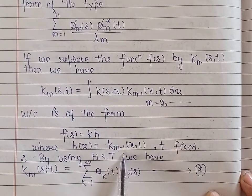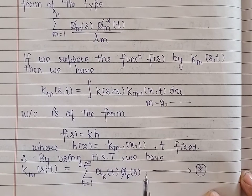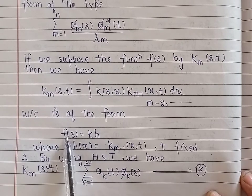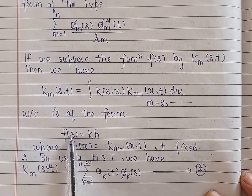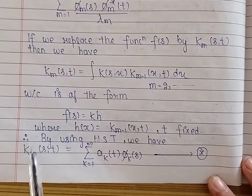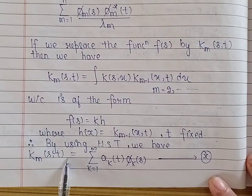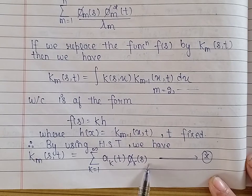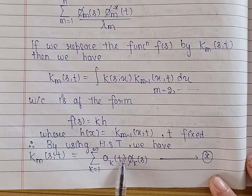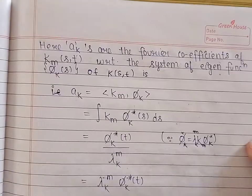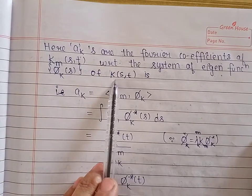Here K_{m-1} is the (m-1)-th iterative kernel. According to the Hilbert-Schmidt theorem, if the function f can be represented in this form, then there exists an expansion of f as an absolutely and uniformly convergent Fourier series. So we can find such a series for K_m. The m-th iterative kernel K_m(s,t) can be written as a summation where k varies from 1 to infinity of a_k(t) times phi_k(s), where phi_k are the eigenfunctions of the given symmetric kernel K(s,t).